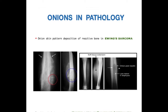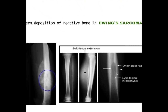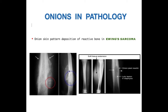In this video we will look at some onion-like structures in pathology which are important from an examination point of view. First is Ewing sarcoma, a tumor that can be a bone sarcoma or soft tissue sarcoma, usually occurring in young adolescents or teenagers. Near the bone there is soft tissue extension, also known as the onion peel reaction, which is a characteristic finding seen in X-ray findings.